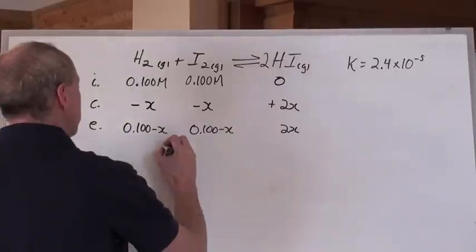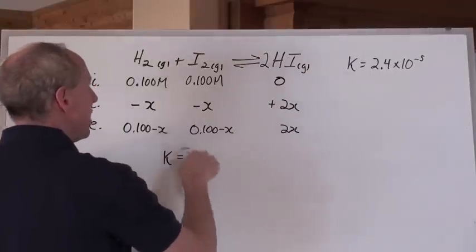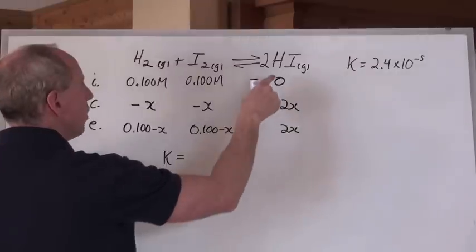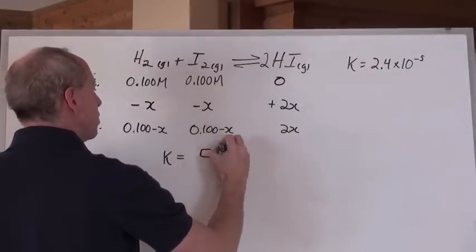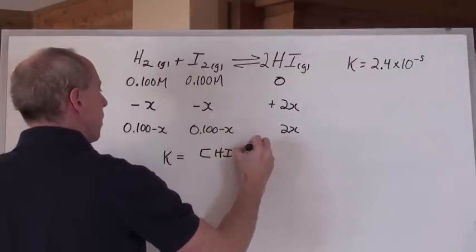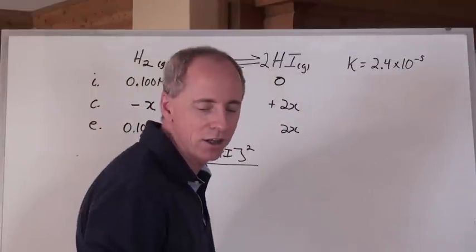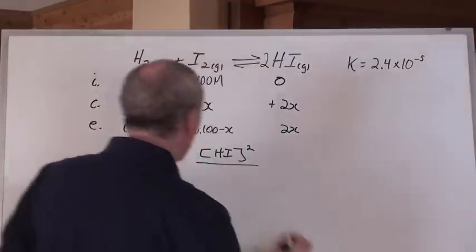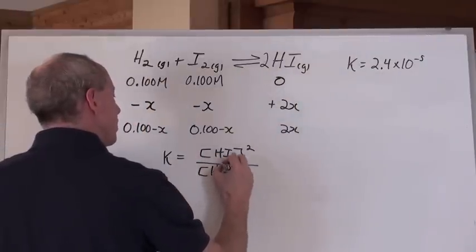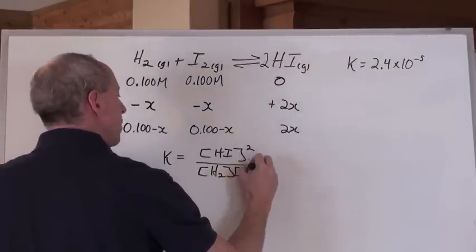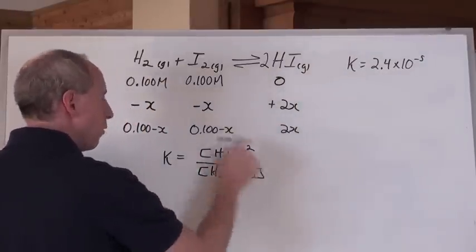So what is the equilibrium expression here? K equals, the expression is going to be, you're going to write the concentration of HI squared, divided by, and these are all gases here, divided by the concentration of the H2, divided by the concentration of the I2. There, I wrote my expression.